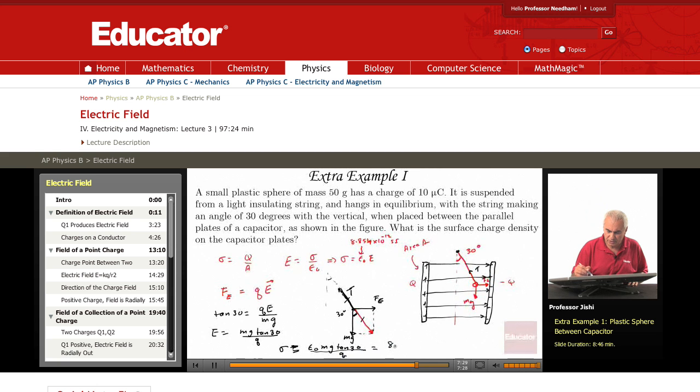Epsilon 0 is 8.854 times 10 to the minus 12. M is 50 grams so that's 50 times 10 to the minus 3, and tangent 30 is 1 over root 3, so over root 3. And then Q, Q is 10 micro coulombs so that's 10 times 10 to the minus 6.